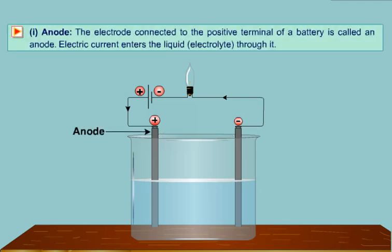The anode, that is the electrode connected to the positive terminal of a battery, is called an anode.